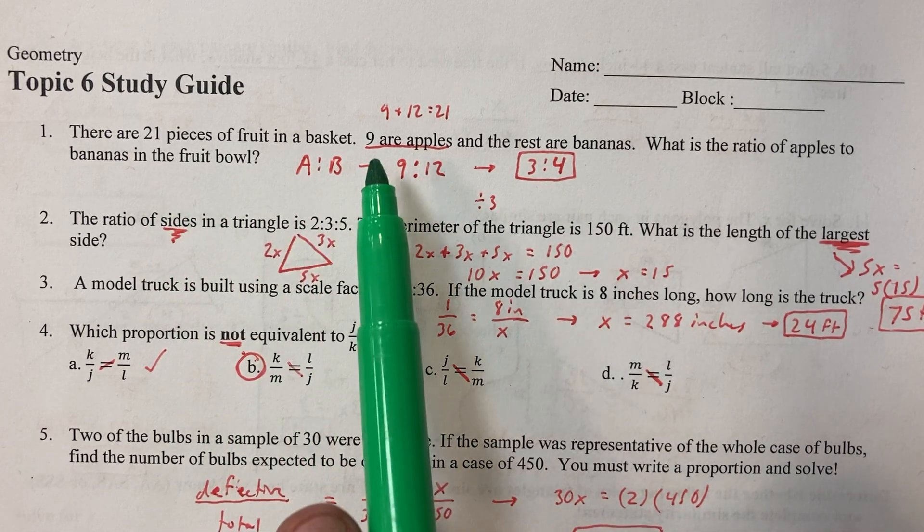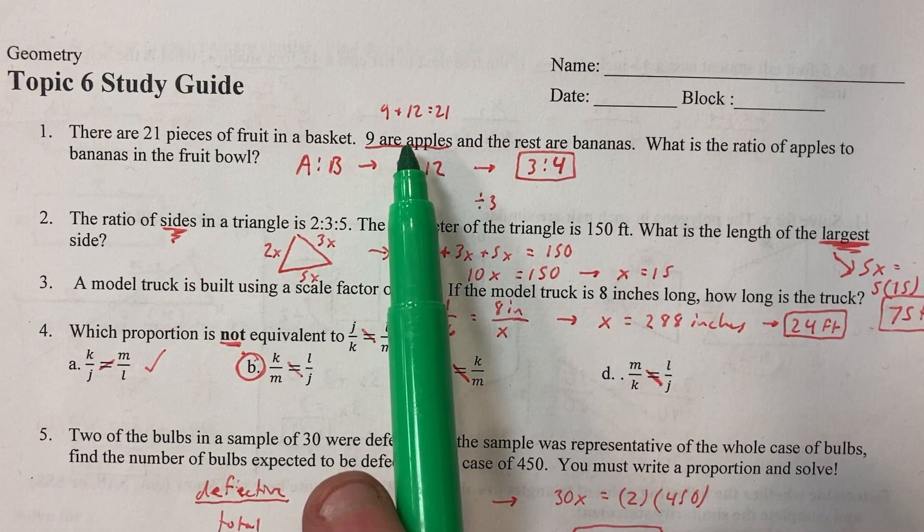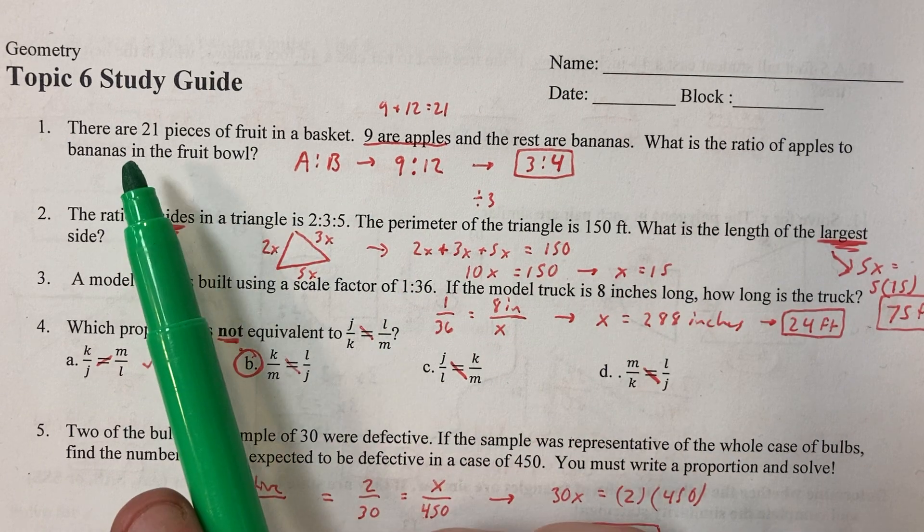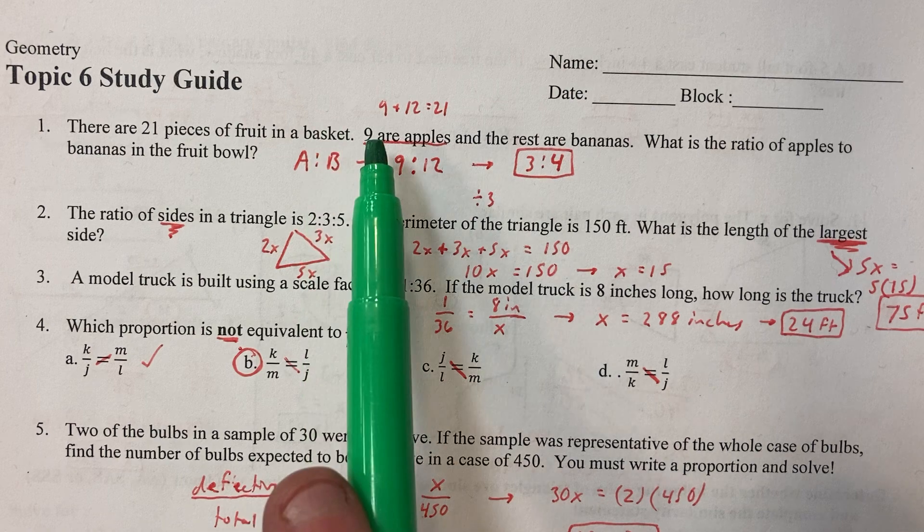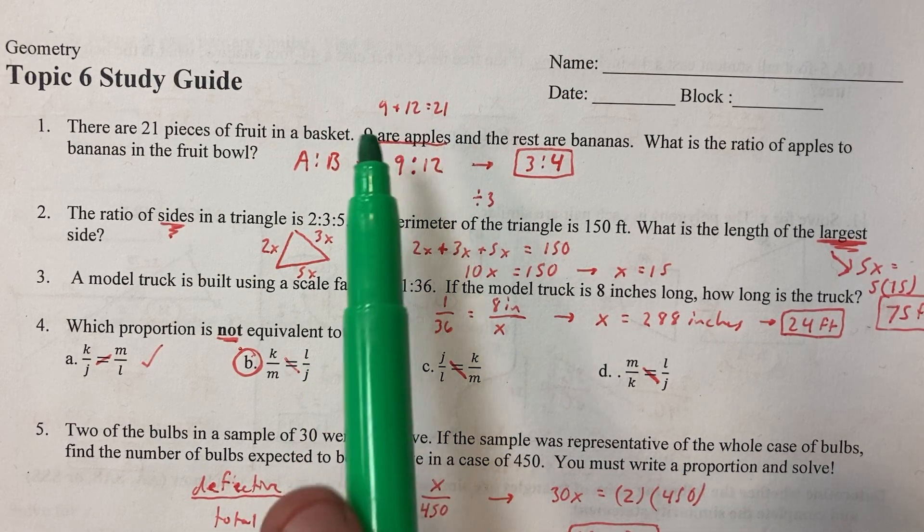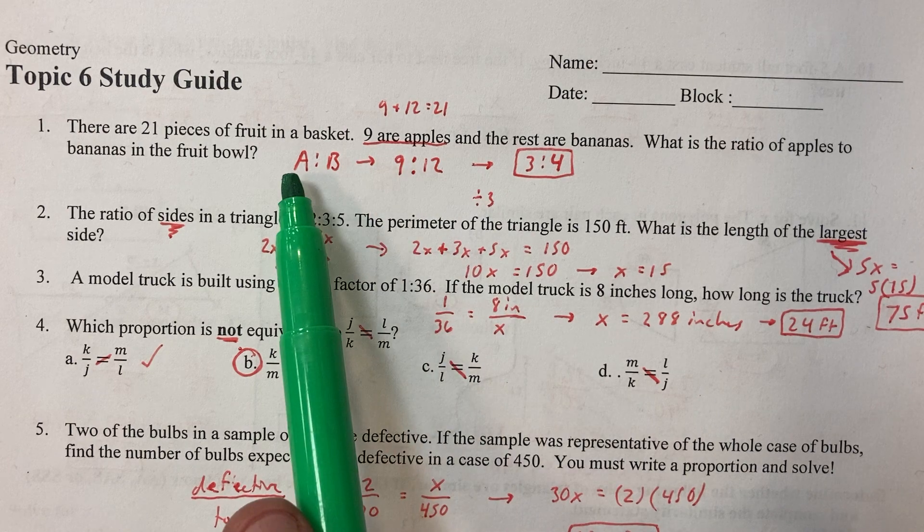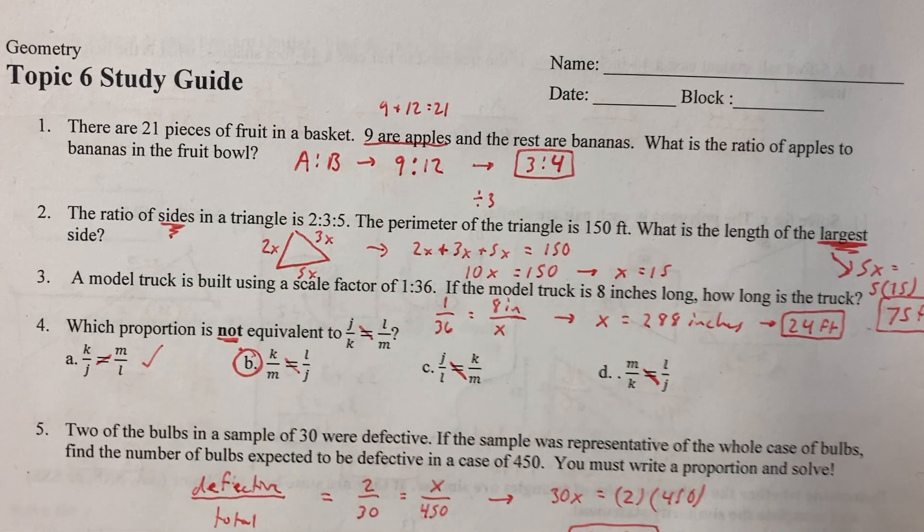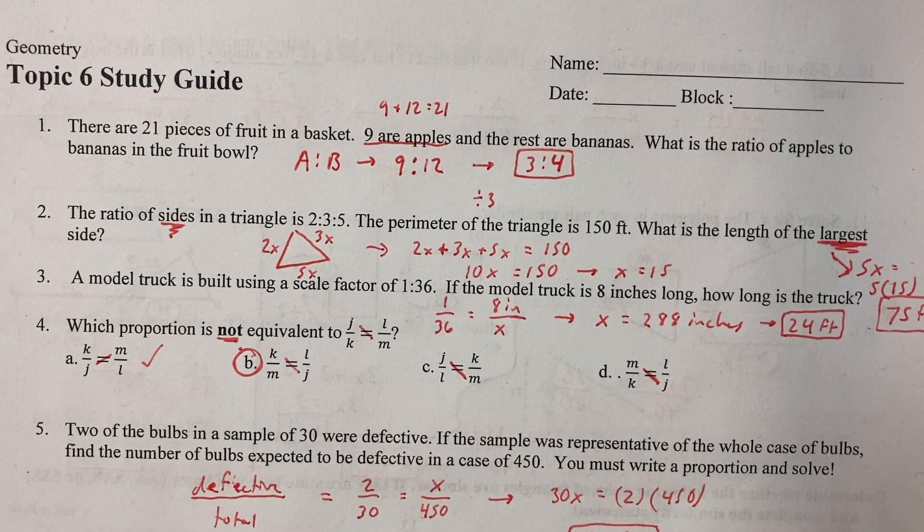We want apples to bananas. We don't get the number of bananas but we get the total. There's 21 total. So 9 plus 12 is 21, so that means there are 9 bananas. The apples to bananas ratio would be 9 to 12 and that reduces by a factor of 3 to 3 to 4.